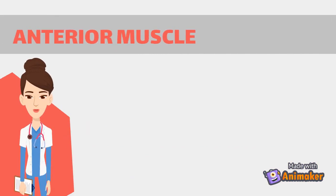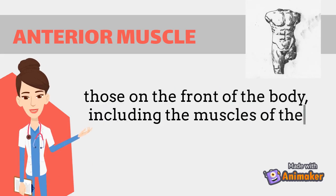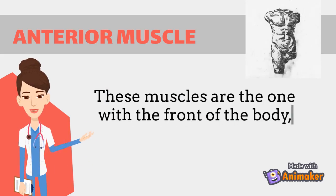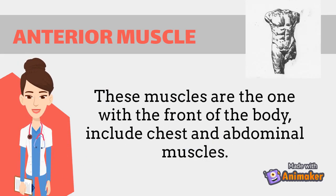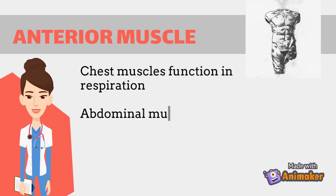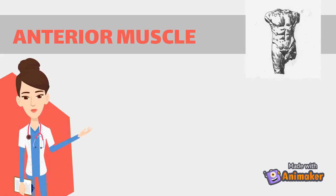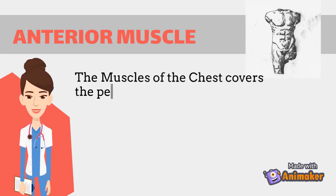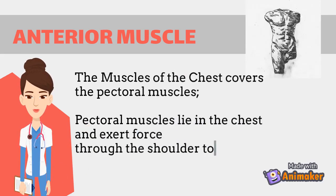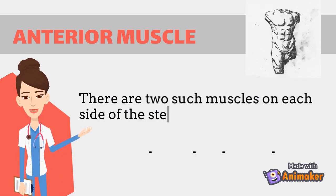The anterior muscles of the torso or trunk are those on the front of the body, including the muscles of the chest, abdomen, and pelvis. Chest muscles function in respiration, while the abdominal muscles function in torsal movement and in maintenance of balance and posture. The pectoral muscles lie in the chest and exert force through the shoulder to move the upper arm.